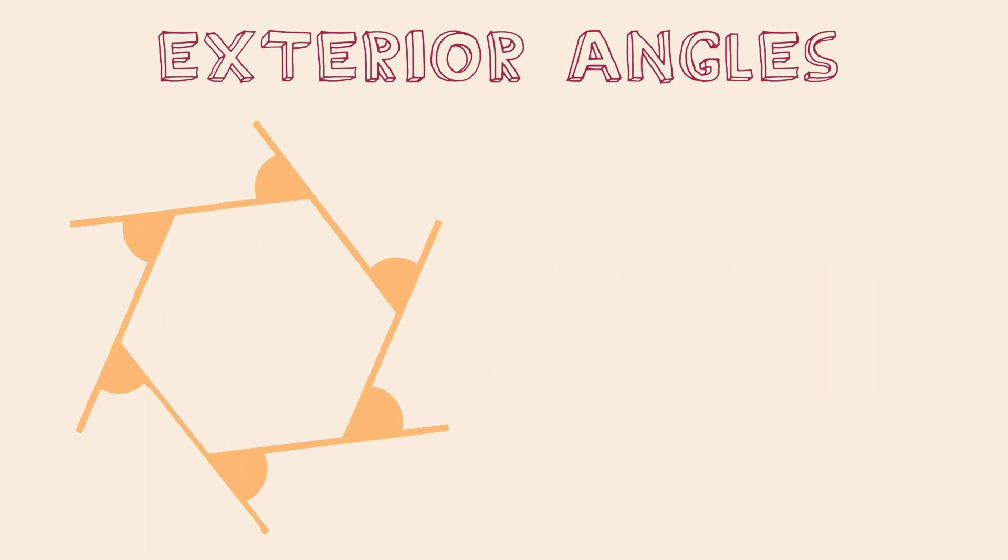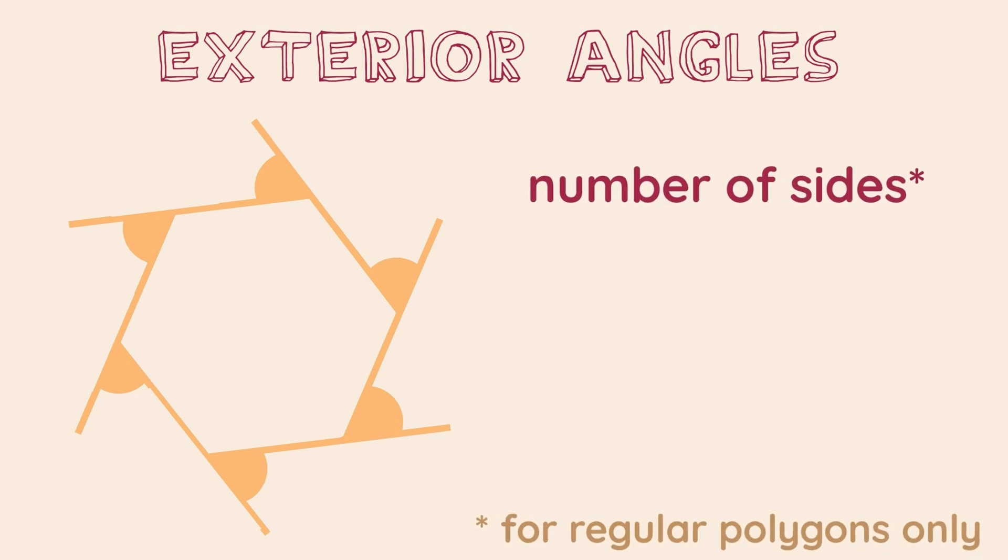Finally, for regular polygons only, we can find the number of sides of that polygon by dividing 360 by the value of the exterior angle. This will tell us how many angles there are, as well as the amount of sides.